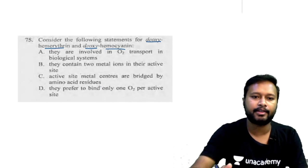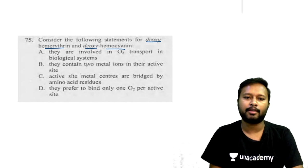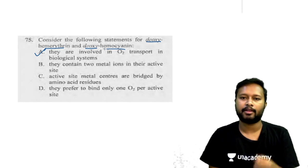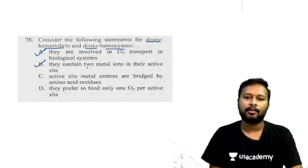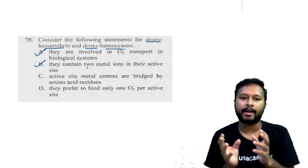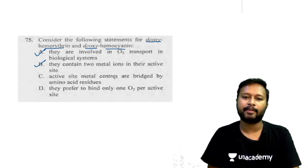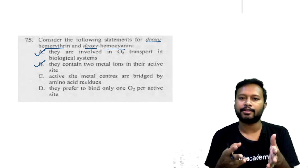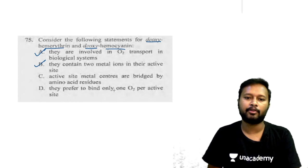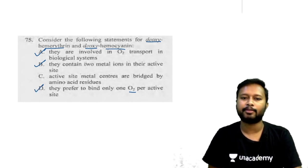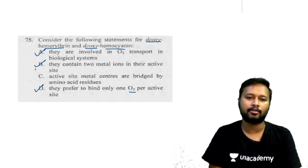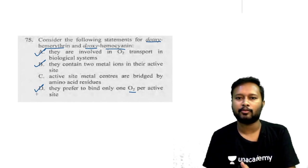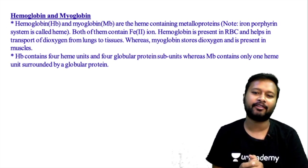Answering the hemerythrin/hemocyanin question: (1) both involved in O₂ transport — correct; (2) both contain two metal ions in their active site (two Cu in hemocyanin, two Fe in hemerythrin) — correct; (3) active site metals bridged by amino acid residues — this happens in hemerythrin but NOT in hemocyanin (bridging there is only by oxygen) — incorrect for both; (4) both bind one O₂ per active site — correct. So statement 3 is wrong; the other three are correct.